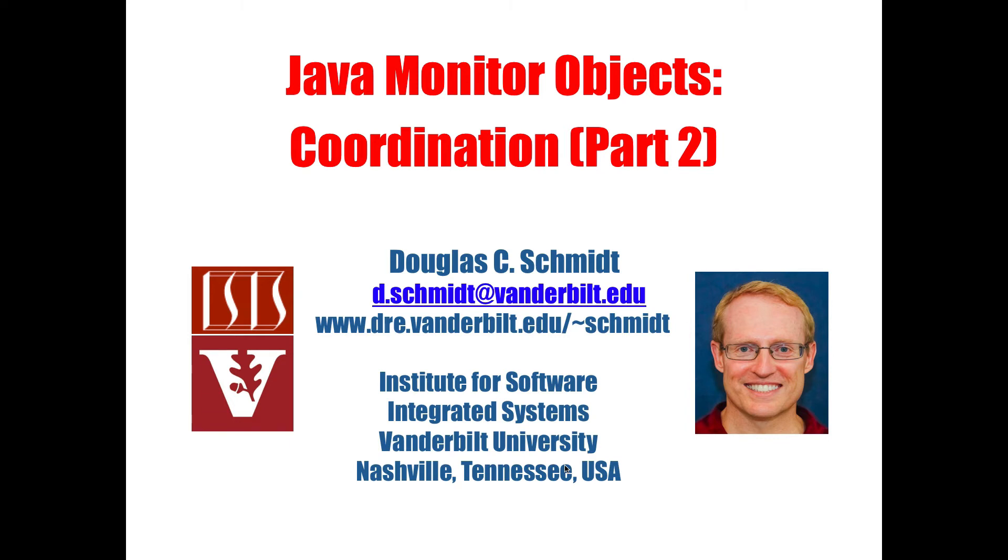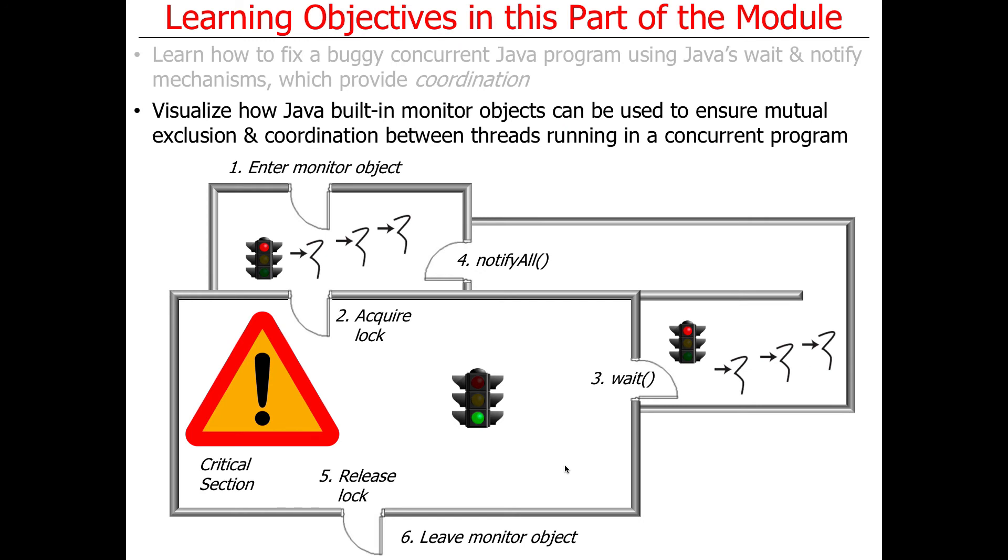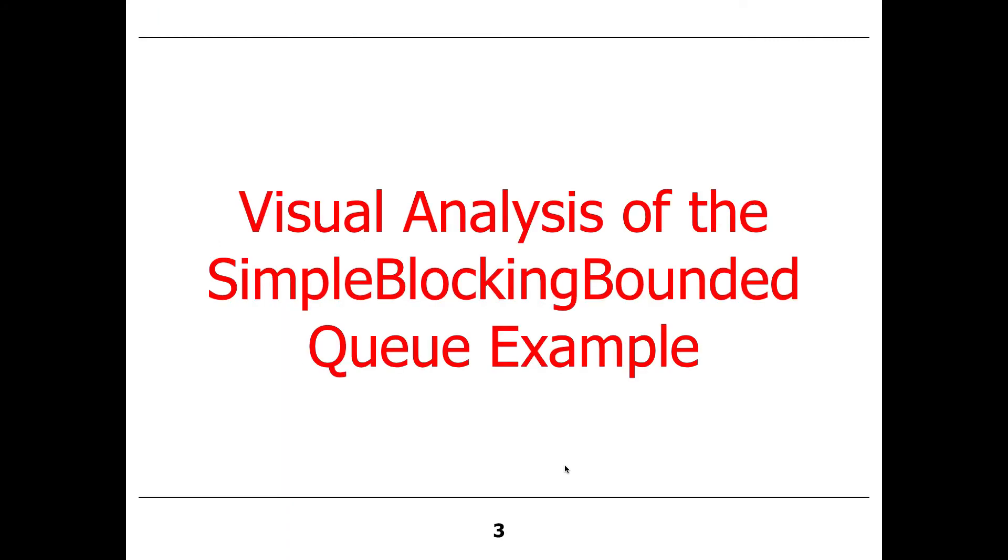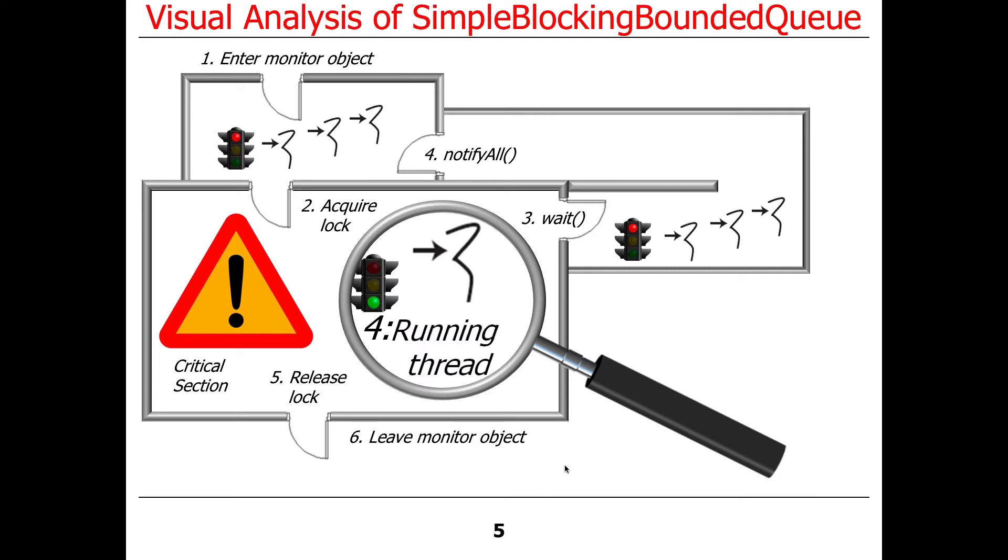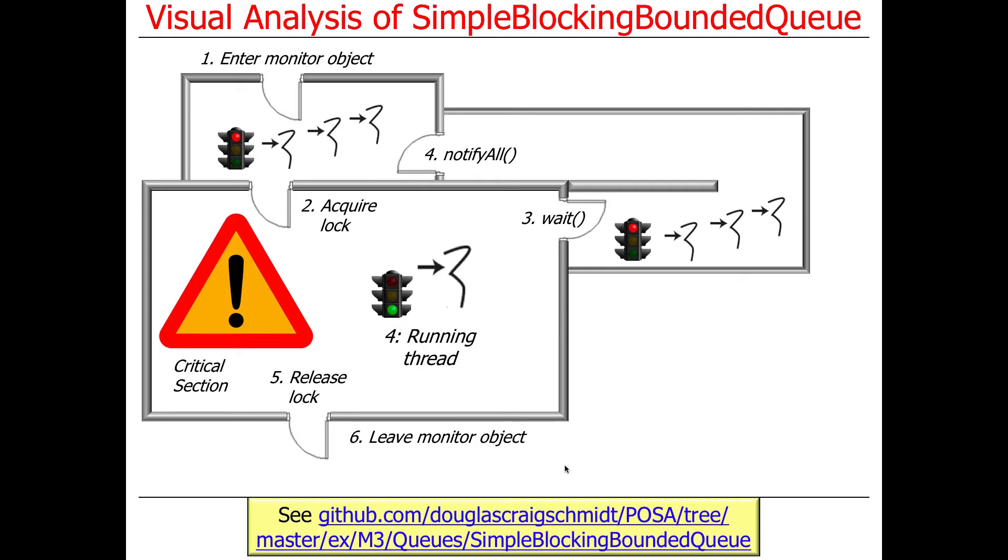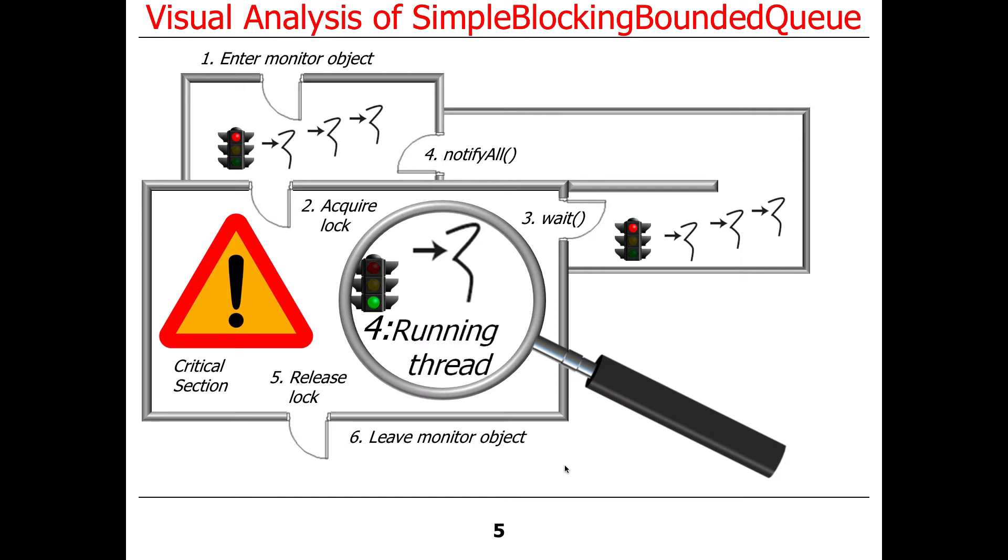Now that you've seen wait and notify in the abstract, let's talk about how we could actually use them to solve our mutual exclusion and coordination problems in concert. We're going to start by doing a visual analysis using my super cool animation prowess with PowerPoint to demonstrate what this looks like, and then we'll look at the source code in the next part of the lesson. Here's kind of what things are going to look like. We're going to have our monitor object, and this is going to be the implementation of the simple blocking bounded queue. Look at my cool use of zooming in. I spent a lot of time on this, I'm not quite sure why, but it's cool.